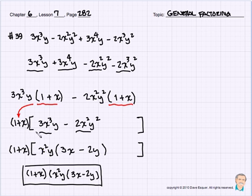We left that 1 plus x on the outside, factored out the x squared y, and that left us with, let's do a different color, that left us with a 3x, one of those, and a 2 and the y.